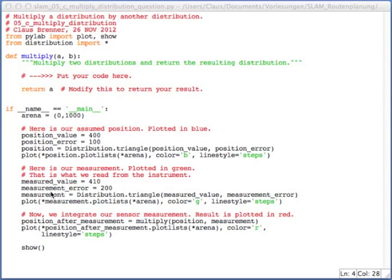The very same thing is done for the measurement, which now is not 400, but 410. And the measurement error is twice as large as the position error. And for this, also a triangle distribution is used, using the measurement value and the measurement error.